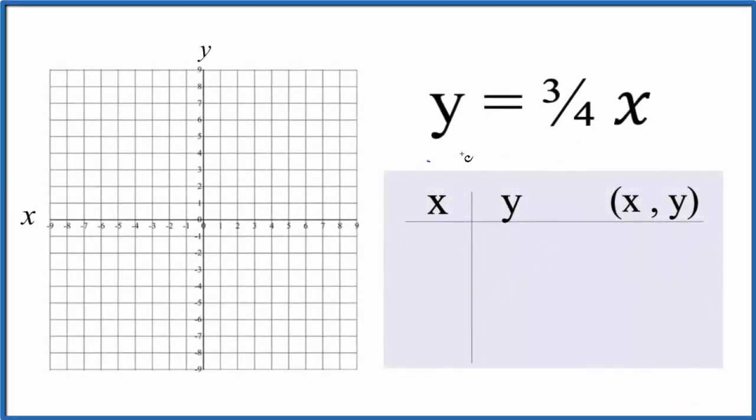Let's draw the graph for y equals 3/4ths x. So we're gonna do this two ways. First we're gonna put values in for x here and find y. Then we can graph those points on our graph here and get the line for y equals 3/4ths x. We'll also look at slope intercept formula to help us do that.